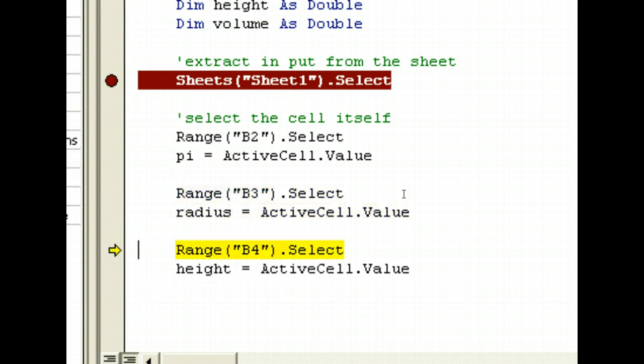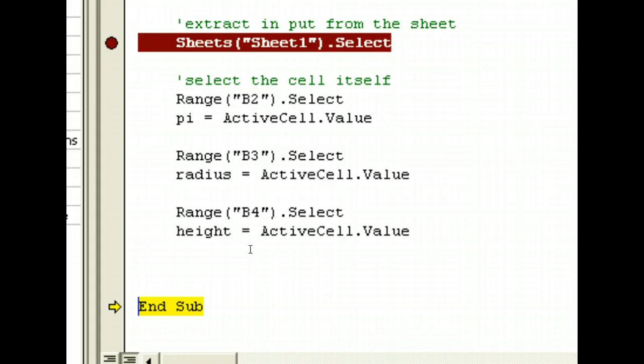Shift F8. Shift F8 again. Now, mouse over radius. Yes, 0.5. Pi is 3.14. Shift F8 again. Height is 1.5. Radius is 0.5. And pi is 3.14. So, what we have now is we have gotten all the user input successfully.